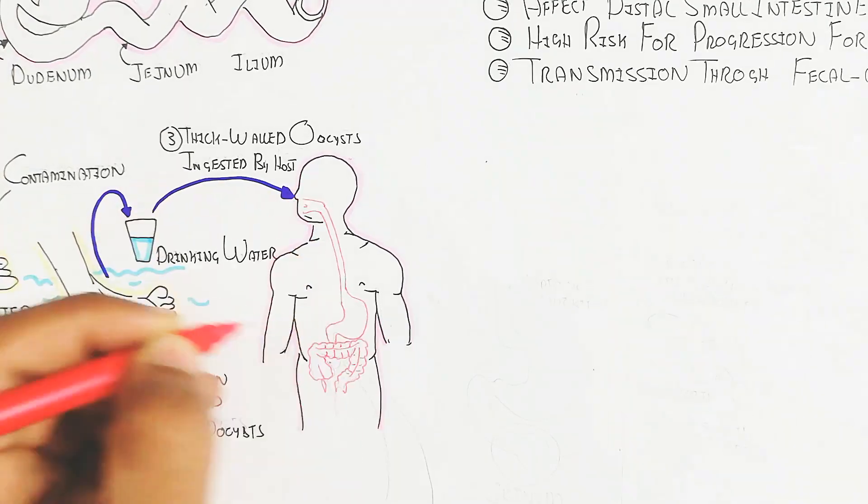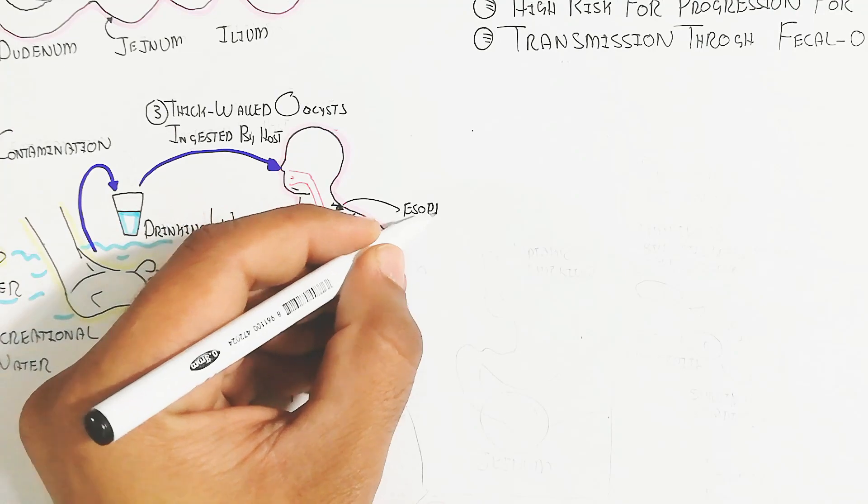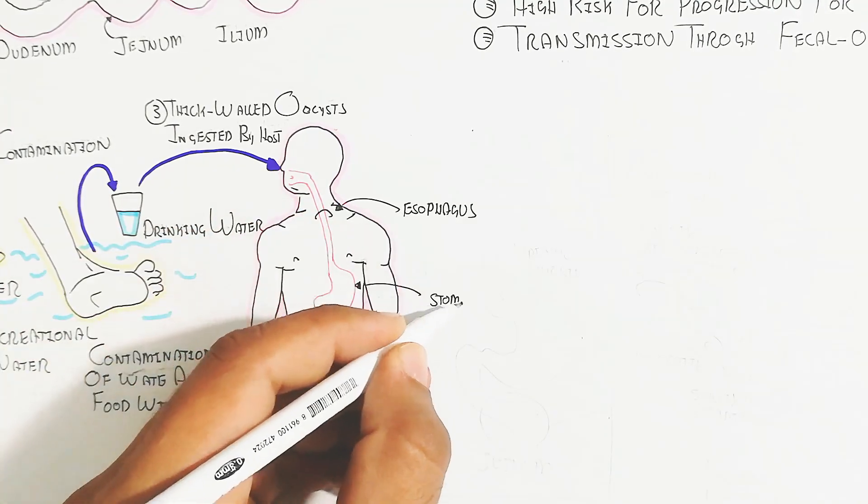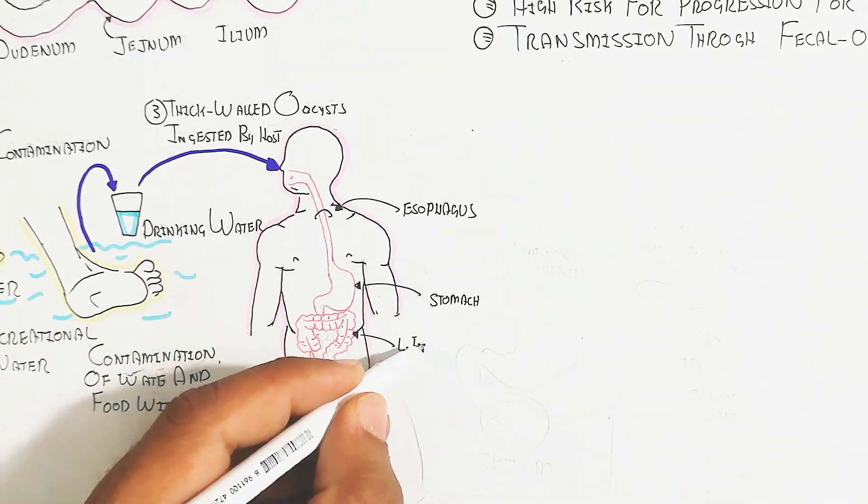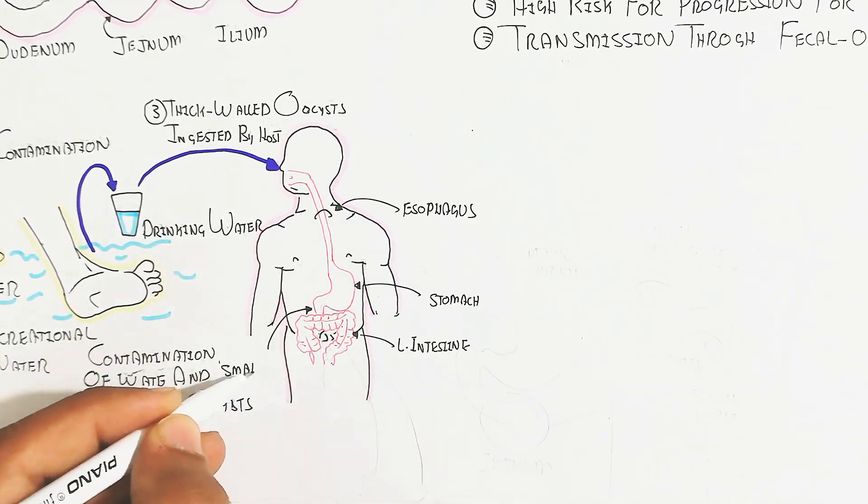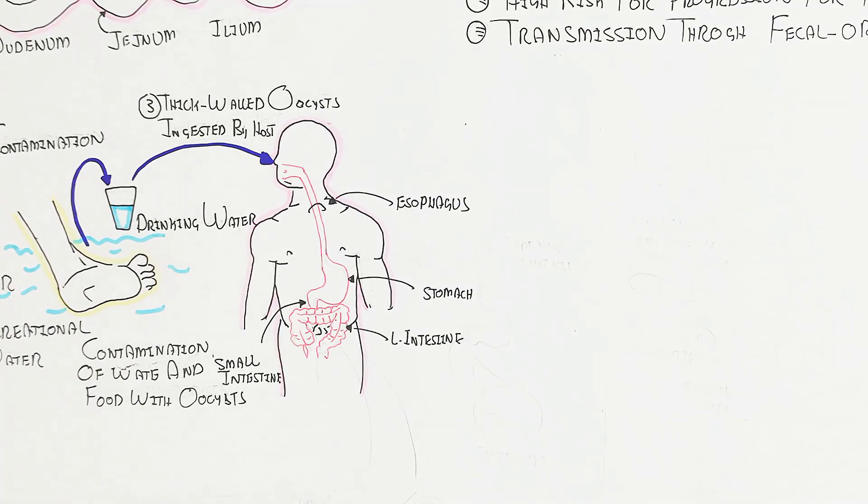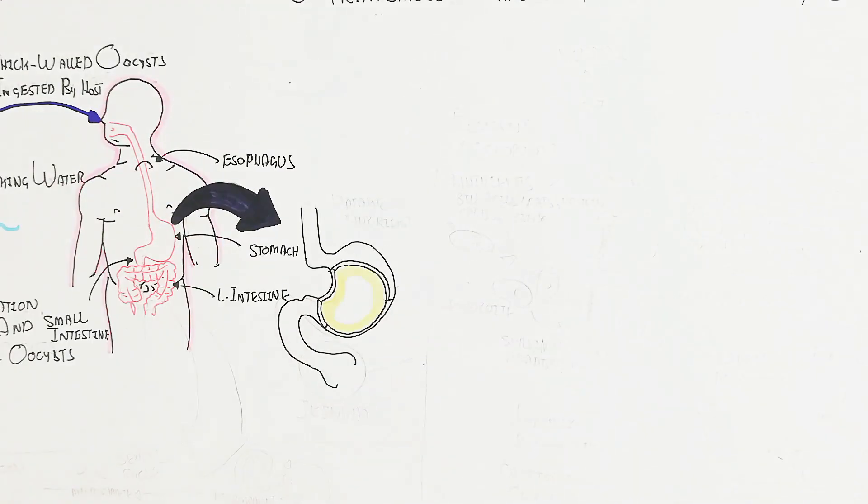It will be swallowed into the esophagus. It can also be transmitted through diet, particularly uncooked food. The stomach will be used for digestion, but this thick wall is undigestible. The large intestine is not involved, but the small intestine is involved, particularly the distal end.